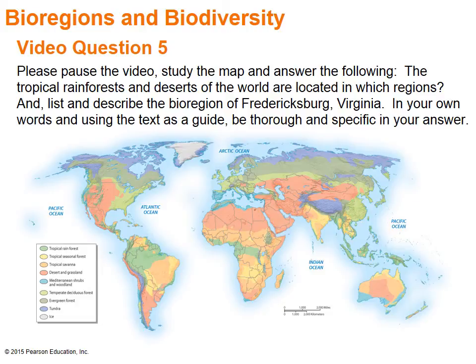Please pause the video, study the map, and answer the following: The tropical rainforests of the world are located in which regions? Also, the deserts of the world are located in which regions? And list and describe the bioregion of Fredericksburg, Virginia. In your own words and using the text as a guide, be thorough and specific in your answer.